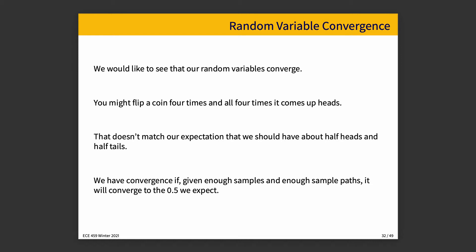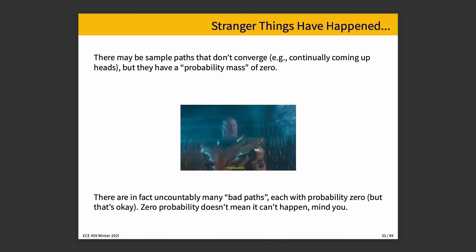Some sample paths don't converge. If you keep flipping the coin and it always comes up heads 100% of the time, that will never converge on the 0.5 value. But they have a probability mass of zero, which is a fancy way of saying they are incredibly unlikely. And there may even be uncountably many bad paths, but each with probability zero, and that's okay.